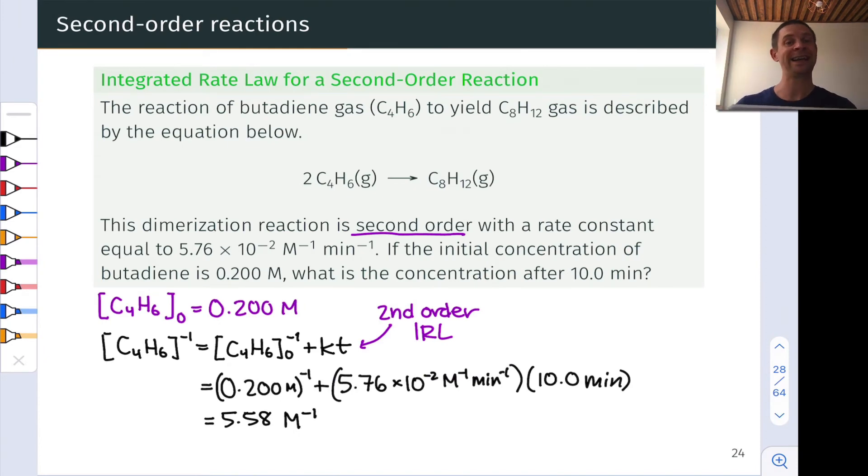In fact, we know everything on the right-hand side of that integrated rate law equation. Initial concentration is 0.2 moles per liter. We know the value of K given in the problem. And we know 10 minutes had elapsed. 10 minutes is our time point of interest. And if we calculate all of this out, we get 5.58 inverse moles per liter, or inverse molar, is equal to 1 over C4H6. So to get the final molarity of C4H6 at this 10-minute time point, we have to do 1 over 5.58. And this comes out to a concentration of C4H6 equal to 0.179 moles per liter.